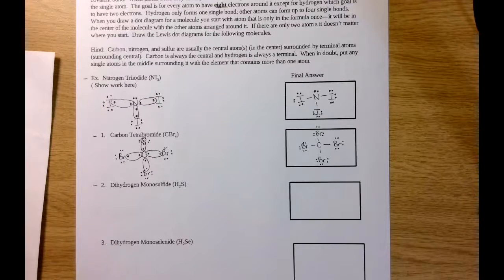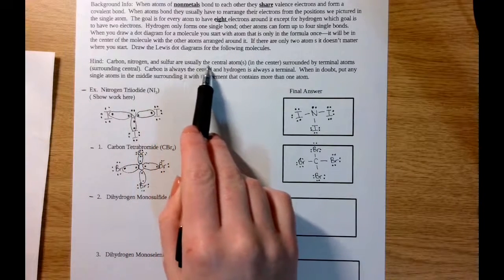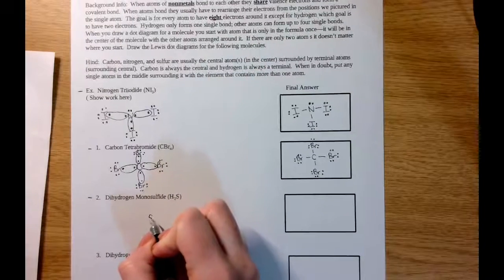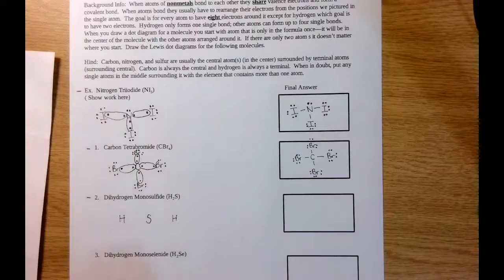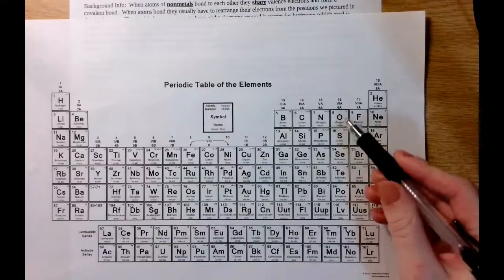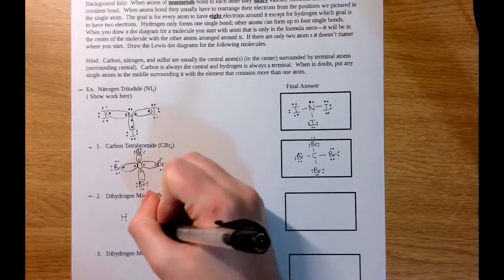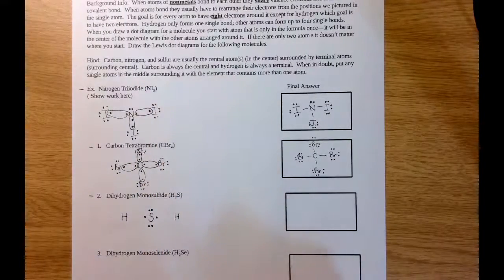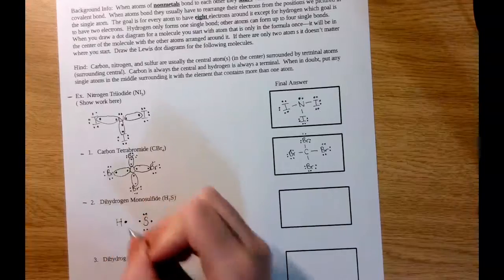Moving on to number two — dihydrogen monosulfide. We need to figure out which element is our central atom, and we know that sulfur is usually our central atom. So we put sulfur in the middle and place one hydrogen on each side of the sulfur atom. Sulfur is in group 6A on the periodic table, so it has six valence electrons. Hydrogen, from group 1A, has one valence electron, which we place on the inside so it can make a bond with sulfur.